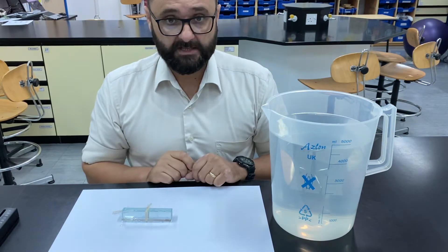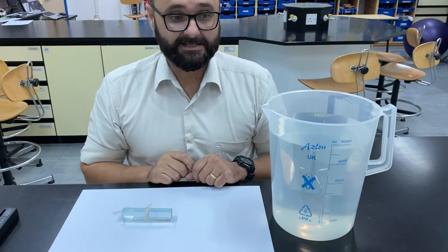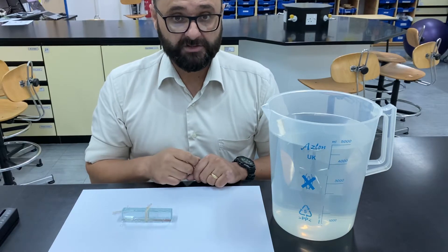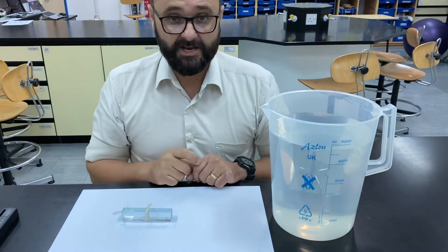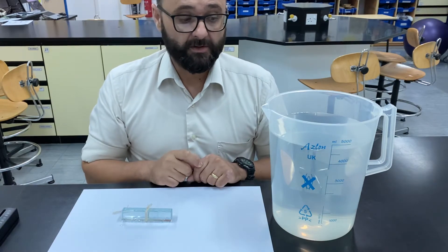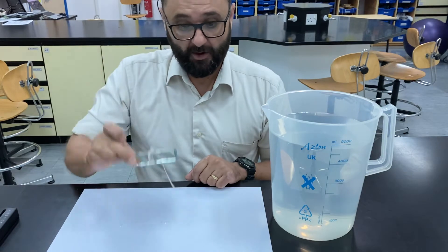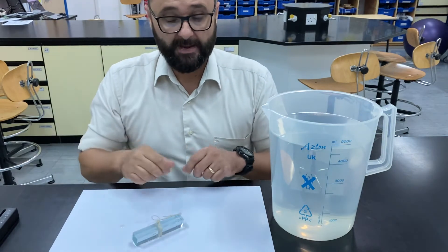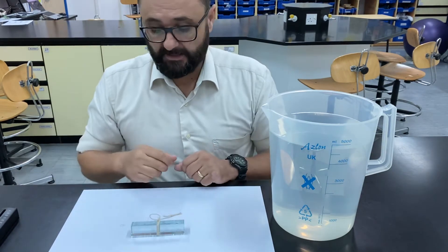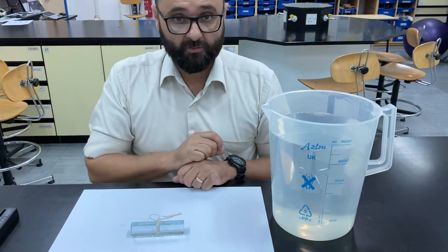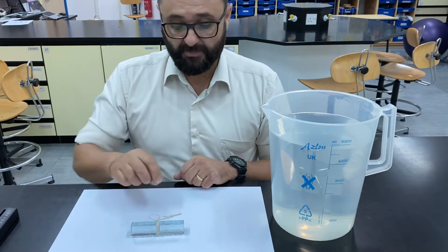Now Archimedes principle, like I explained earlier, states that the value of upthrust, the actual force upwards in newtons, is exactly equal to the weight of the water that is displaced by the object. Now that can be, if you have an object displacing some water, it can either be partially or fully submerged.